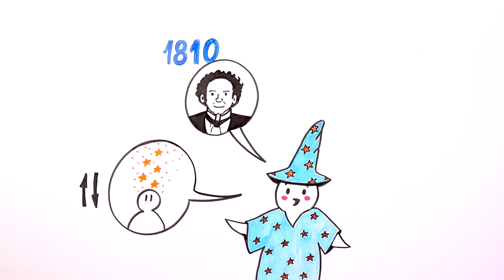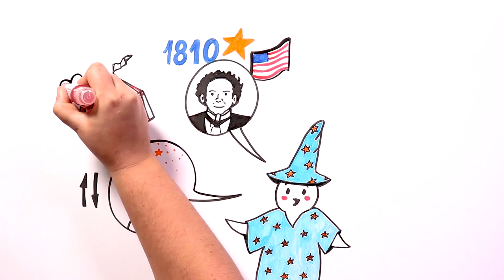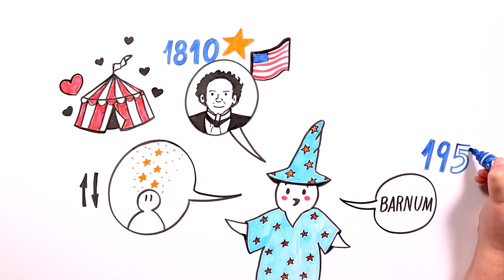And that is precisely what Phineas Taylor Barnum, who was born in 1810 in the United States, discovered. He was a circus entrepreneur who became famous for being a good publicist. In his circus, everyone found something they liked, so everyone was attracted to him.